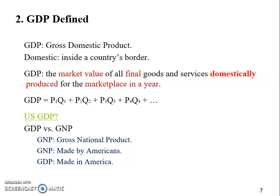For example, we see a lot of foreign firms investing in the United States, and whatever they make here on U.S. soil will go into the U.S. GDP. Let me give you a very simple example to show the difference between these two.